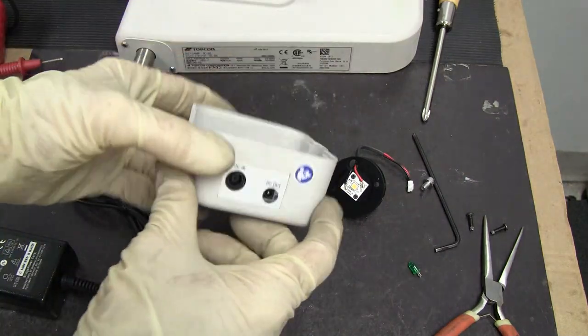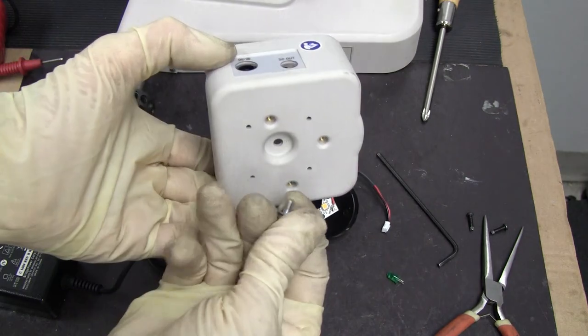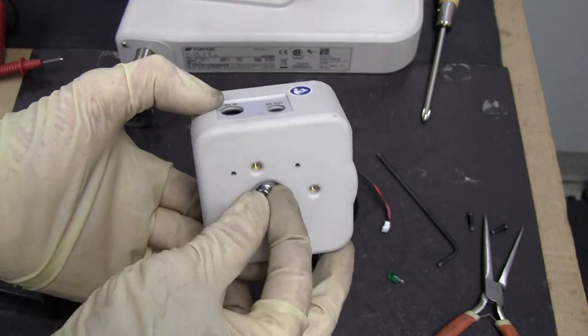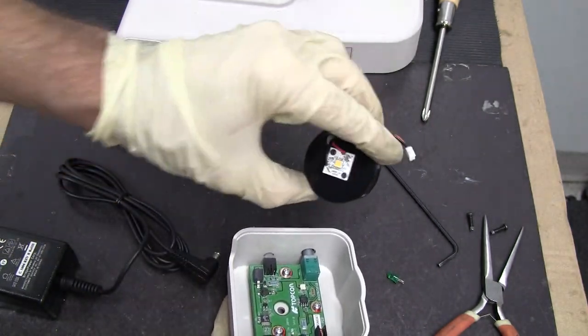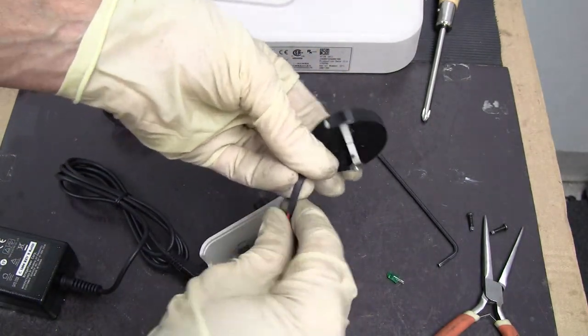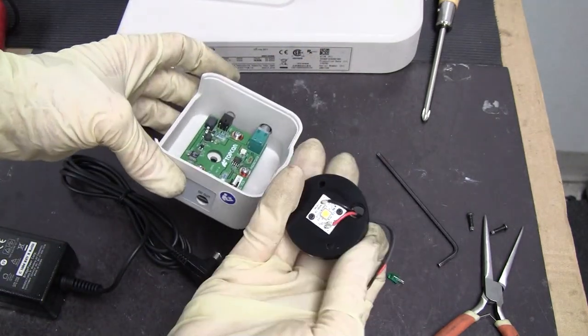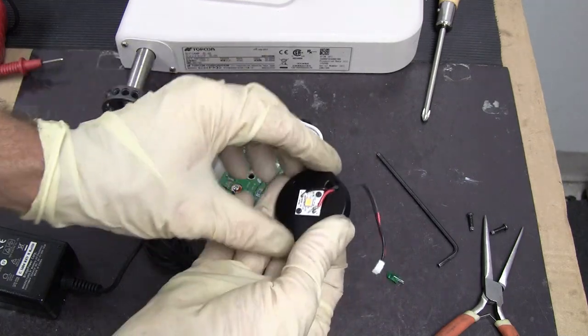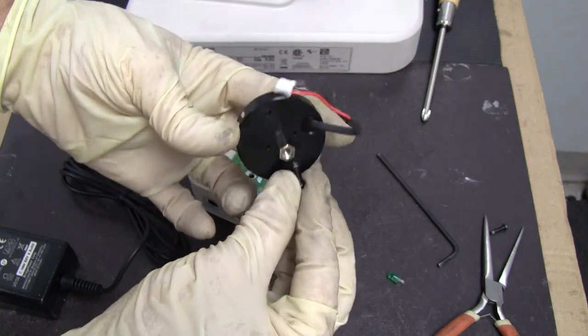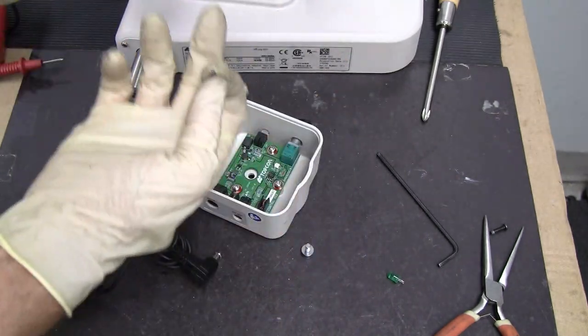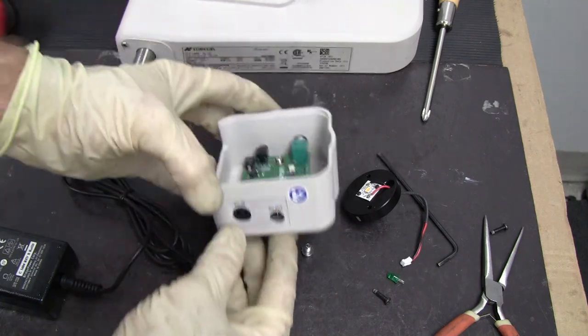I've taken this off the bottom, which is held on by an Allen screw. It also has the LED plugged into it, but I've taken this off for now. This comes off with two screws, two Phillips head screws.